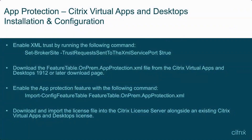To configure App Protection for Citrix Virtual Apps and Desktops, first we must enable XML trust by running the following command on the Delivery Controller for the Citrix Virtual Apps and Desktops site. Next, we need to download the featuretable.onprem.appprotection.xml file from the Citrix Virtual Apps and Desktops 19.12 or later download page. This step is only required for versions 19.12, 2003, and 2006, as App Protection features are natively included in newer releases.